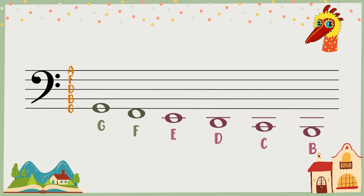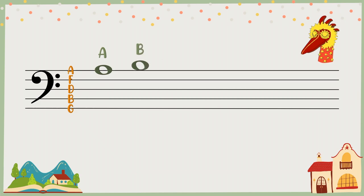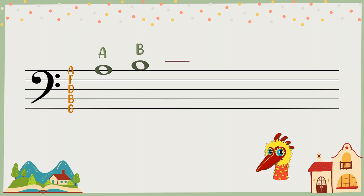Let's look above. Line five is A, followed by B inside the ledger space. Draw a ledger line, you'll have middle C.